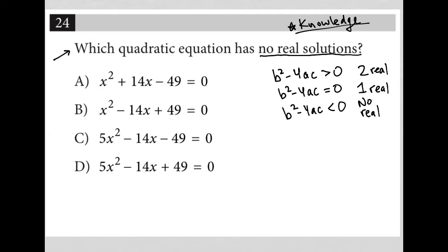So obviously we're in this area here. We want b squared minus 4ac to be less than zero. So we're just going to test each one of these answers until we get one that makes this true, right? Where b squared minus 4ac is less than zero.